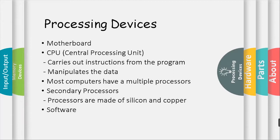Processing devices. Motherboard: the main circuit board that connects to many different components. CPU: the brain of the computer. It carries instructions from a program and manipulates the data. Examples of CPU are Intel i-series and AMD Ryzen series.